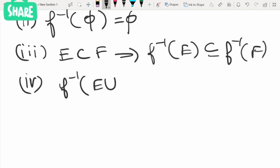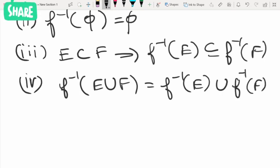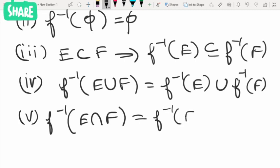And what about the union? f inverse of E union F is equal to f inverse of E union f inverse of F. And f inverse of E intersection F equals f inverse of E intersection f inverse of F.